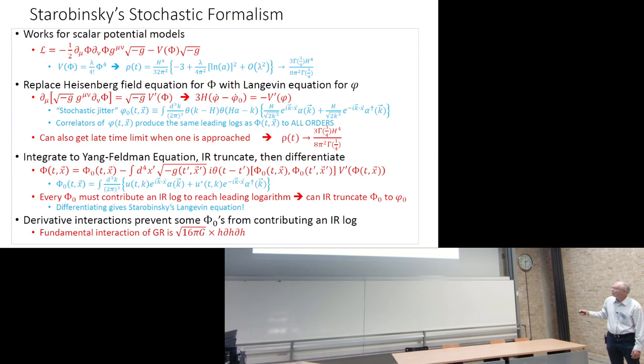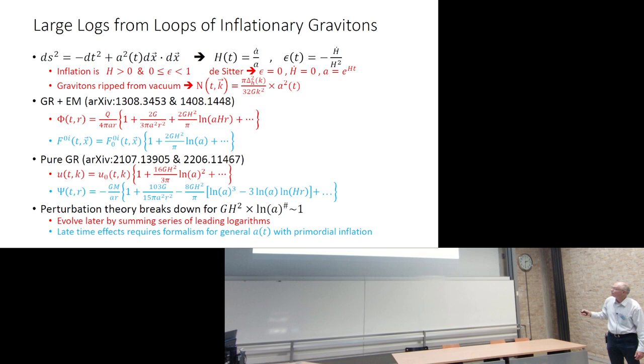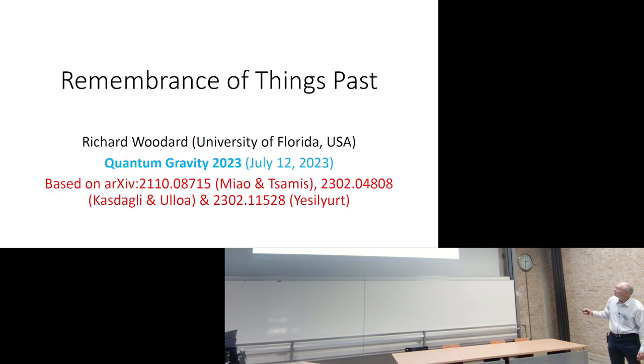Nonetheless, it fails for quantum gravity. The reason it fails is because of the derivative interactions in quantum gravity. Anybody who's really done a calculation of quantum gravity knows that the fundamental vertex looks like HDHDH. Those DHs are bad news as far as deriving Starobinsky's formalism. The key step is that you have to know that every single free field generates an infrared logarithm. That'll be true as long as there's no derivatives in the interaction. But if there are derivatives in the interaction, those differentiated free fields won't do it. They'll still contribute order one, but they won't generate large logarithms. You can't tell when you iterate the free field expansion which ones are going to have the derivatives and which ones aren't. So you can't just simplify the equation at the level of the Yang Feldman equation. That's what prevents you from getting a stochastic realization of it.